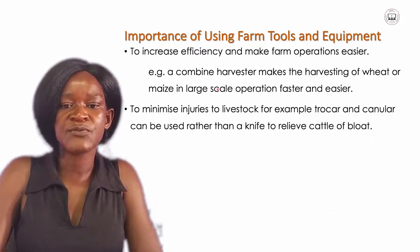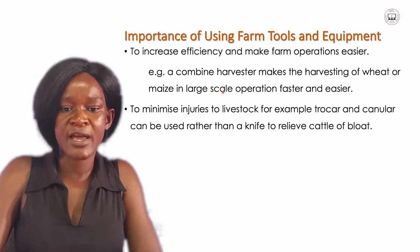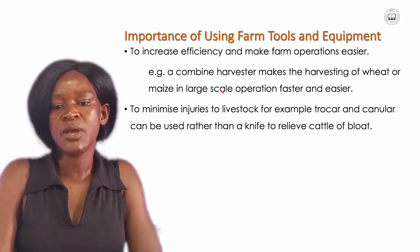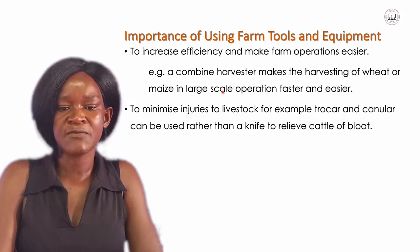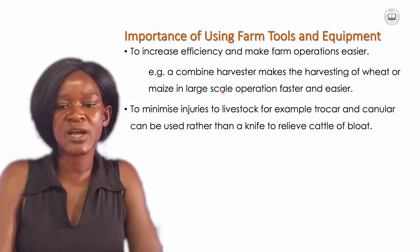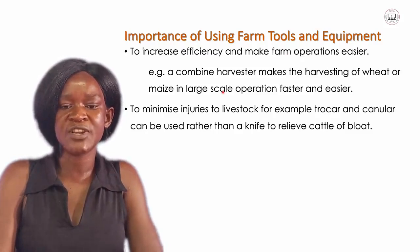Apart from that, some farm tools and equipments minimize injuries to livestock. For example, a trocar and cannula can be used rather than a knife to relieve an animal of blood. Locally, we use a knife to get rid of blood from cattle, which can injure the livestock, but instead we can use the trocar and cannula to relieve blood from the cow, minimizing injuries.